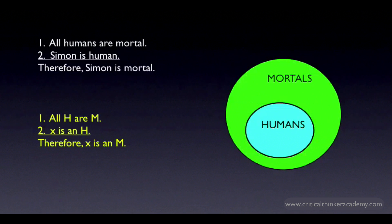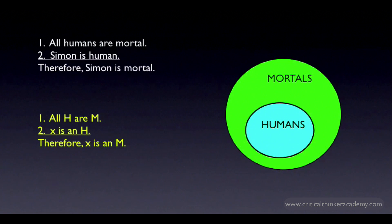This is the fundamental difference between symbolizations in propositional logic and categorical logic. In propositional logic, you use a single letter to represent a complete proposition. In categorical logic, the analysis is more fine-grained — you're looking inside a proposition and symbolizing the categories that represent the subject and predicate terms. You construct a proposition by showing how these categories relate to one another.